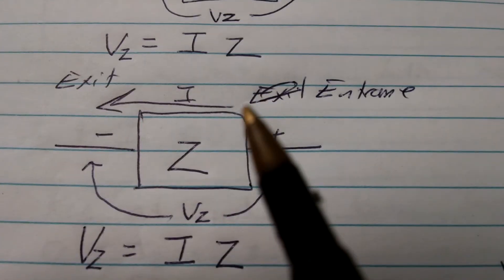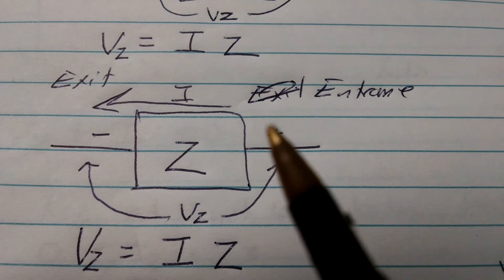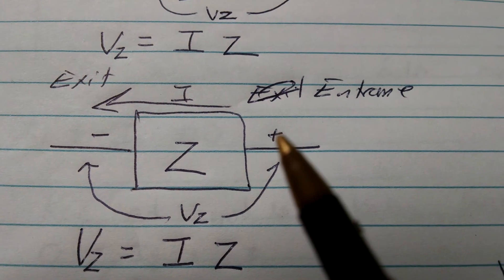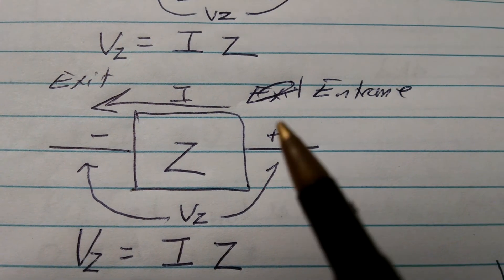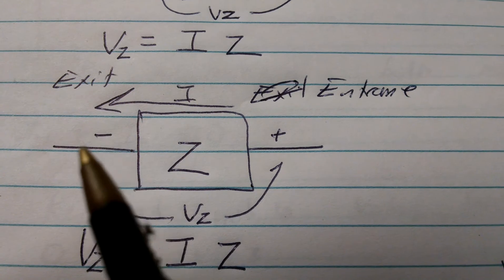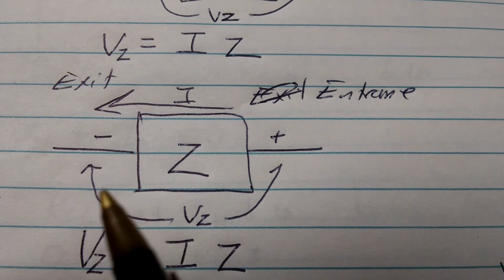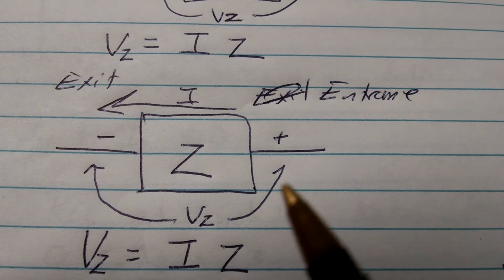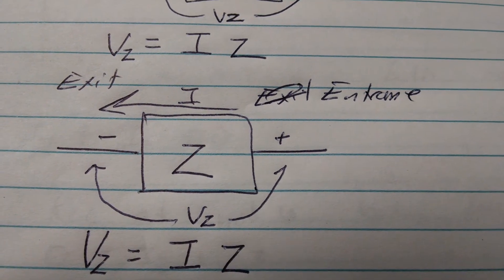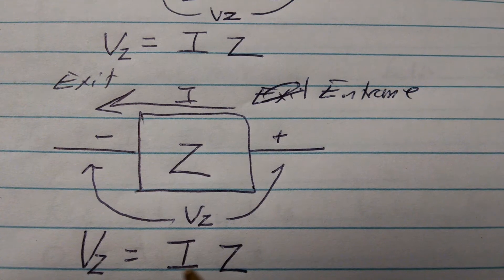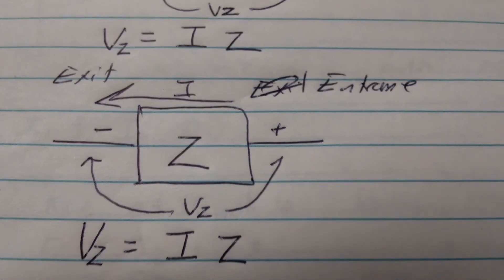Now I have the current going the other direction. The entrance is now here — that's the higher potential — exit is there, negative, lower potential. VZ is measured this way, and VZ equals IZ.